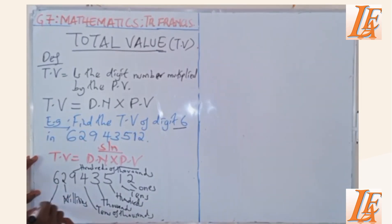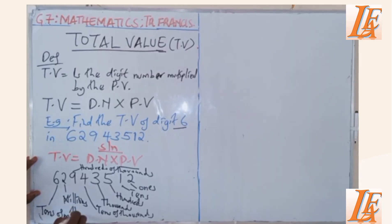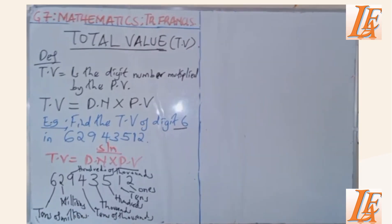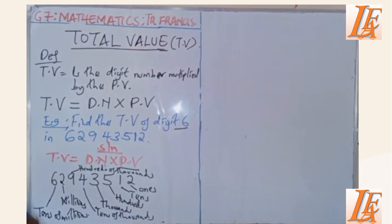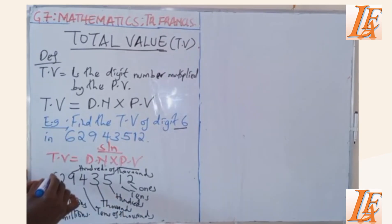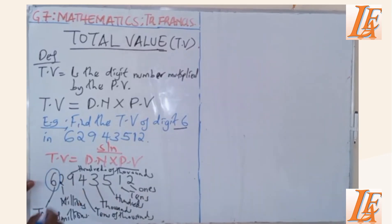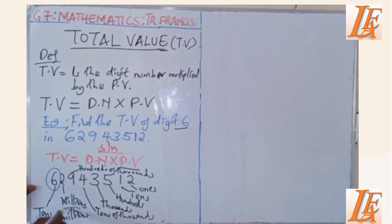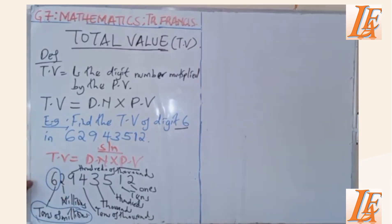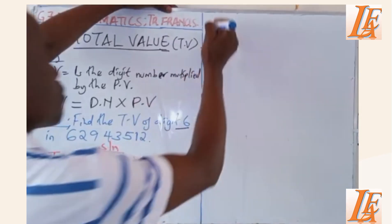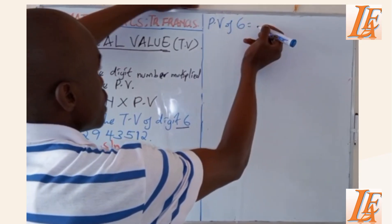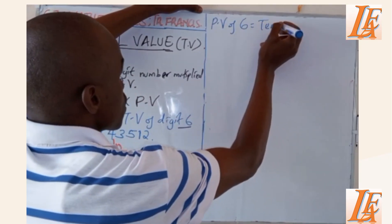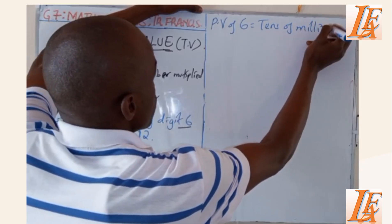6 is in the place value of tens of millions. Having found all the place values of the digits in this given number, the interesting digit is 6, so we circle it. 6 — digit 6 — is in the place value of tens of millions. So the place value of 6 is tens of millions.